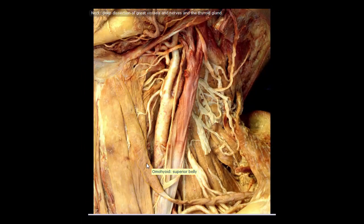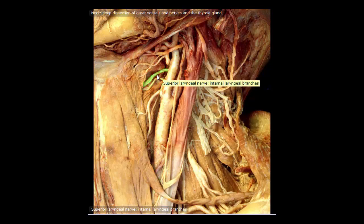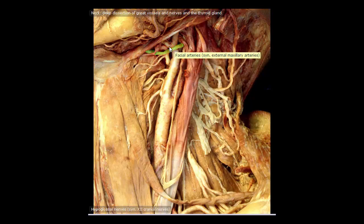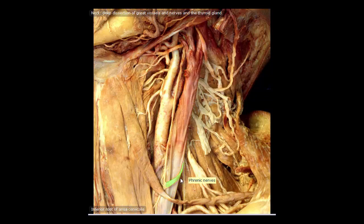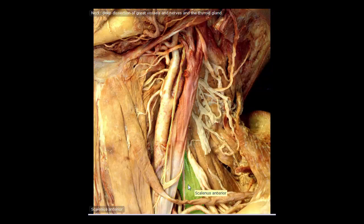In the deep dissection of the neck we can identify: the omohyoid with its superior belly, sling, and inferior belly; the sternohyoid and sternothyroid; the common carotid artery; the superior thyroid artery; the superior laryngeal artery; the internal branch of the superior laryngeal nerve; the external carotid artery continuation; the lingual artery; the hypoglossal nerve; the facial artery; the IJV; and the ansa cervicalis with its inferior root, loop, and superior root — which provides motor innervation to the infrahyoid muscles. The phrenic nerve crosses anterior to the anterior scalene, and the upper trunk of the brachial plexus emerges between the anterior and middle scalene.